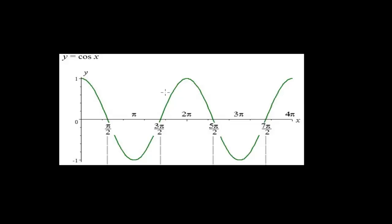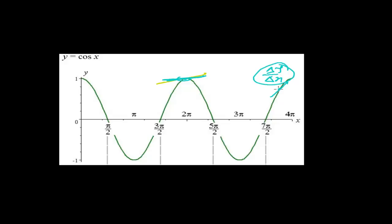Derivative means just the slope of the curve at a particular point, or you can say the tangent. If you go to find the slope at a particular point, it will be just a tangent at that point, and the slope of that tangent is exactly the derivative — how the curve is changing, meaning how the y part is changing with the x part. That rate is exactly the derivative, or the rate of change of the function at a particular point.